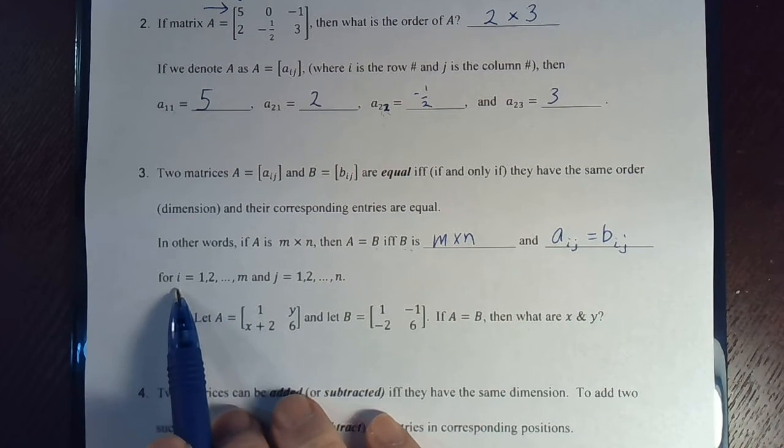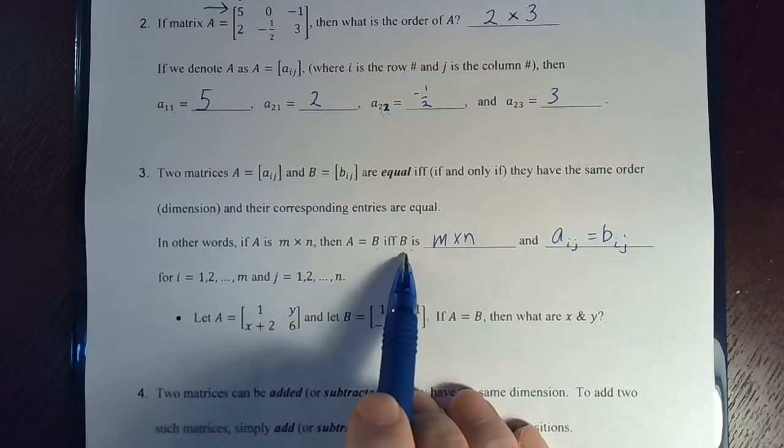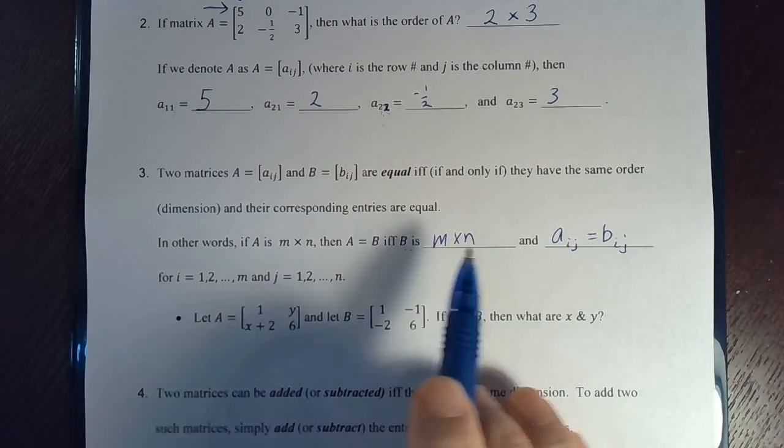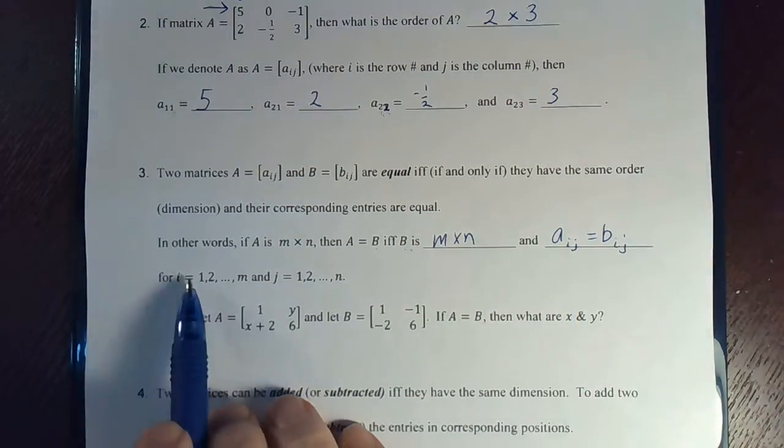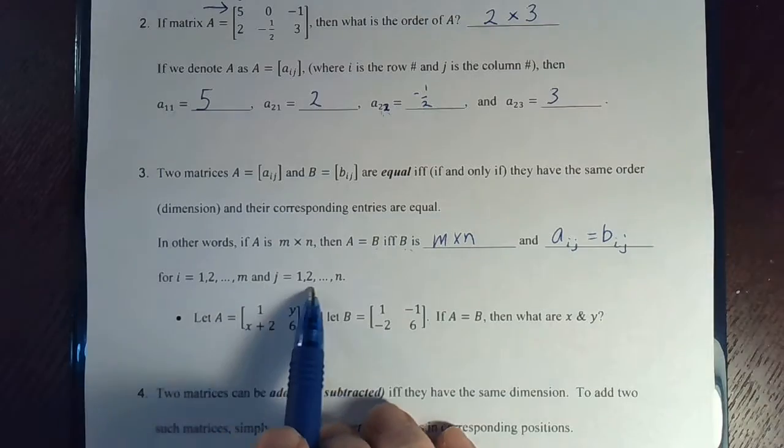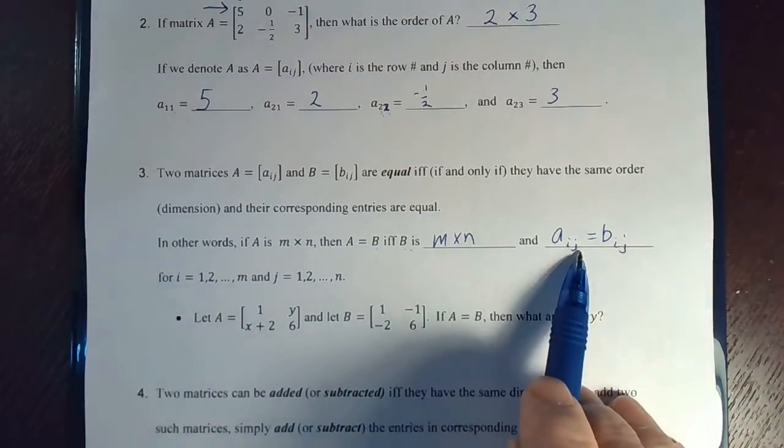And this just tells the limits of the variable i and j. i is the number of rows. The rows is M rows, right? So, the first variable, the first represents the row number. So, i can go from 1 to M. j goes from 1 to N, the number of columns.